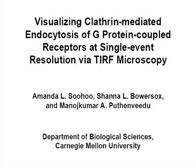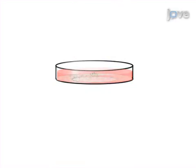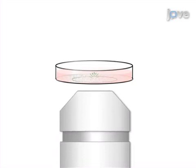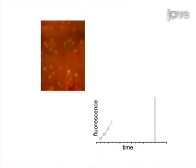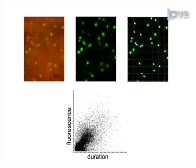The overall goal of this procedure is to visualize and quantitate the dynamics of individual clathrin coated pits in live cells. This is accomplished by first transfecting fluorescently tagged endocytic and cargo proteins into an adherent cell line. The next step is to image the cells with total internal reflection fluorescence, or TIRF, microscopy. The lifetimes of small sets of clathrin coated pits are then quantitated manually using an image processing and analysis program. The final step is to quantify the lifetimes of clathrin coated pits by objective automated detection and analysis.